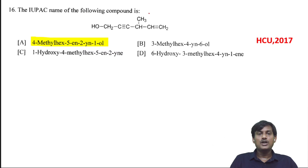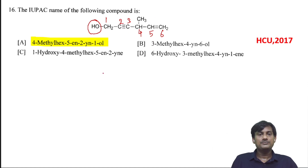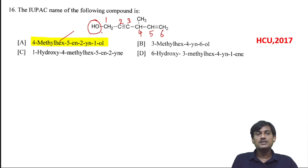The IUPAC name of the following compound: the main functional group is OH, so we give numbering from the OH side — 1, 2, 3, 4, 5, 6. We have a 4-methyl substituent and the parent chain has 6 carbons, so the root word is hex. At the fifth position there is a triple bond (yn), at the second position there is a double bond (en), and at the first position there is alcohol (ol). So the name is 4-methylhex-5-yn-2-en-1-ol.